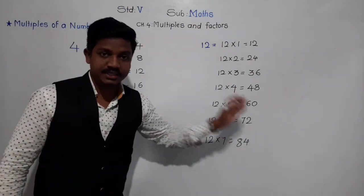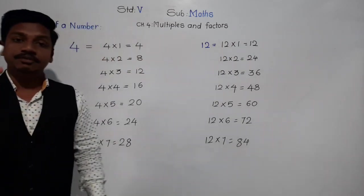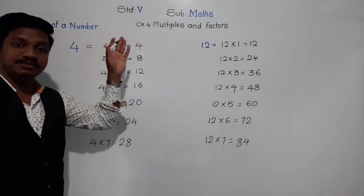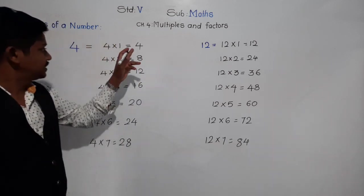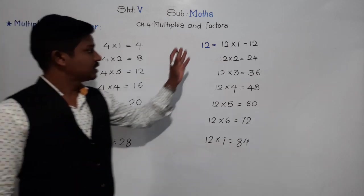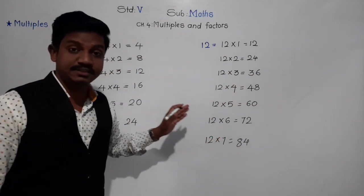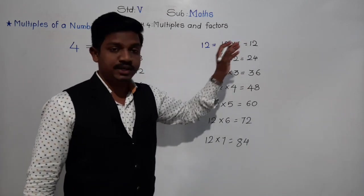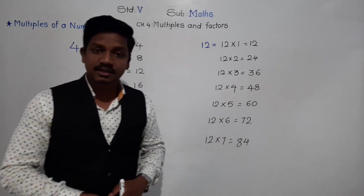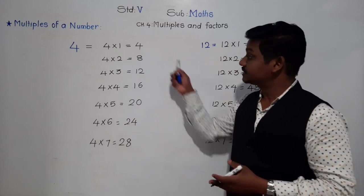Now, by observing the multiples of 4 and the multiples of 12, we come to know that these numbers are simply the numbers that appear in the multiplication table of 4 and 12 respectively. So, multiples are nothing but the numbers which come in the table of the given number.